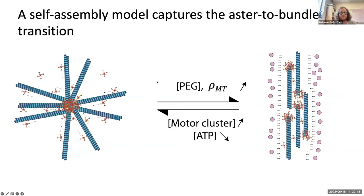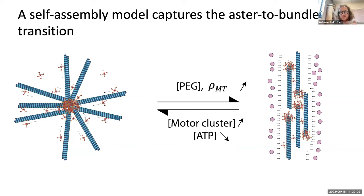The self-assembly model captures the aster-to-bundle transition — and importantly, once you have an aster you'll be contractile, and once you have a bundle you'll be extensile, because of the soft modes present in those structures. We can push this further: we can make predictions about how PEG and PRC1 differently impact the transition, because PEG doesn't need to bind to the microtubule, so the aligning interaction depends linearly on PEG and quadratically on microtubule concentration.